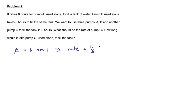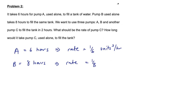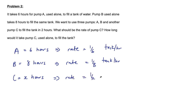Pump A takes six hours to fill the tank, so its rate is one-sixth of a tank per hour. For pump B, it fills the tank in eight hours, so its rate is one-eighth of a tank per hour. For pump C, we don't know how long it would take, so let's say it takes X hours. Its rate would therefore be one-over-X tanks per hour.